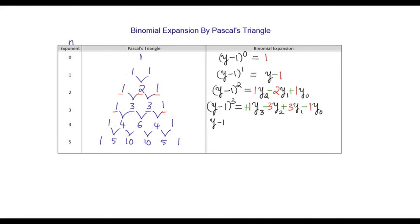Similarly for (Y minus 1) to the power 4: Y^4, Y^3, Y^2, Y^1, Y^0. Putting alternating positive and negative signs, always starting from positive: plus, minus, plus, minus, and plus. Taking the coefficients from Pascal's triangle: 1, 4, 6, 4, and 1.